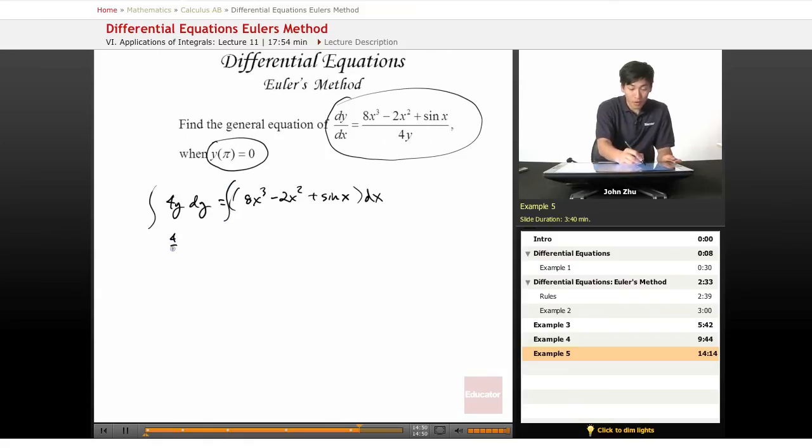we will get 4 over 2y squared equals, and it's just a power rule, 8 over 4x to the 4th minus 2 over 3x to the 3rd plus negative cosine of x. So this will become a negative sign eventually. And we add our constant.